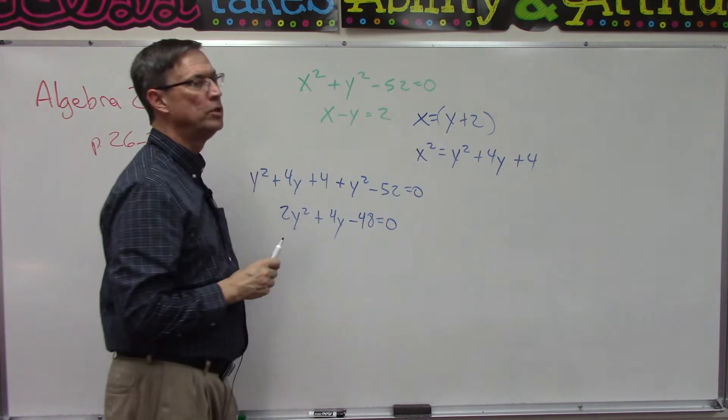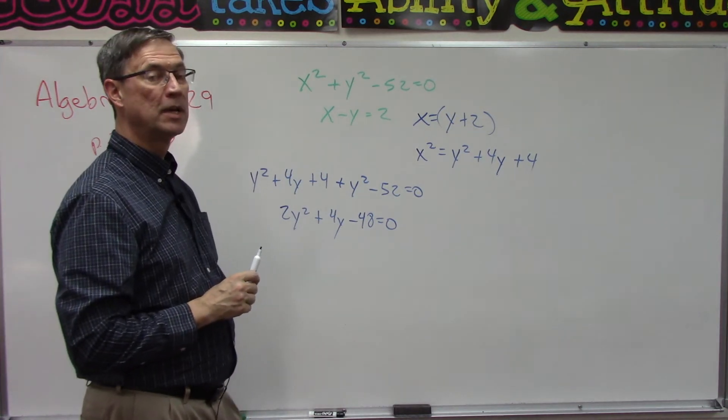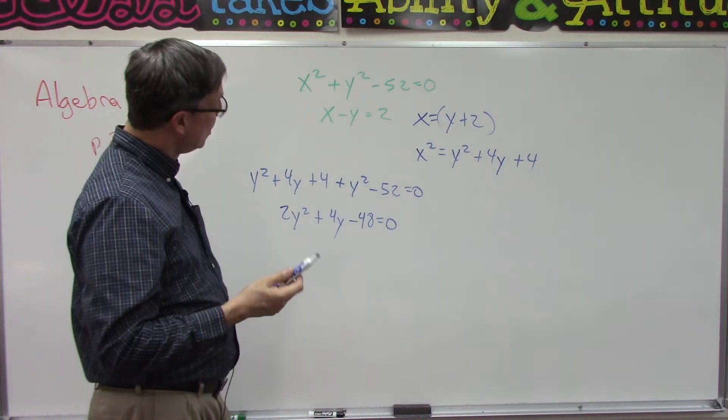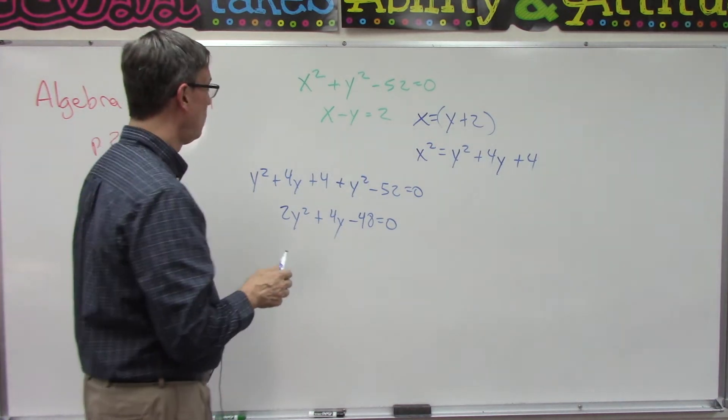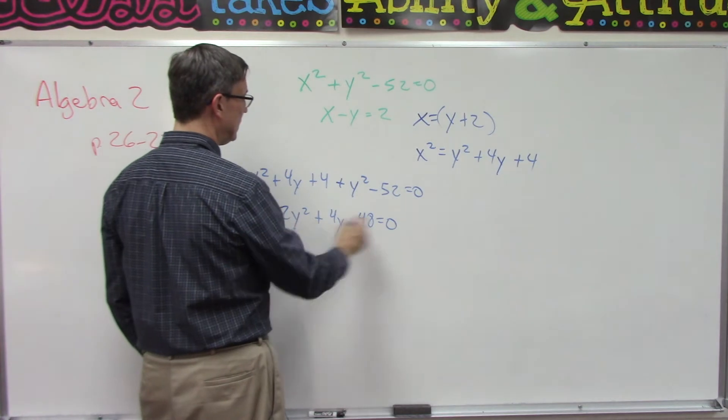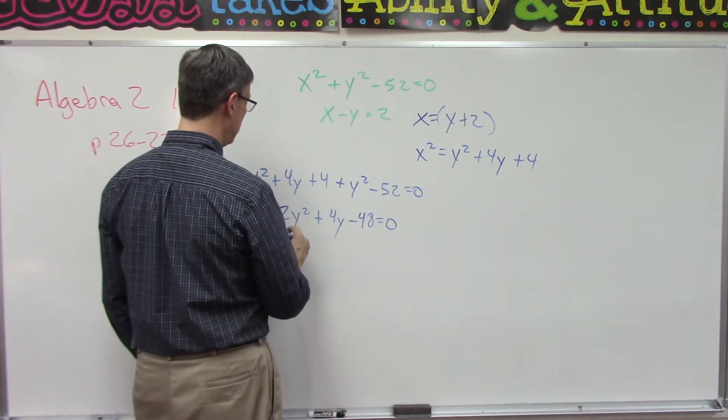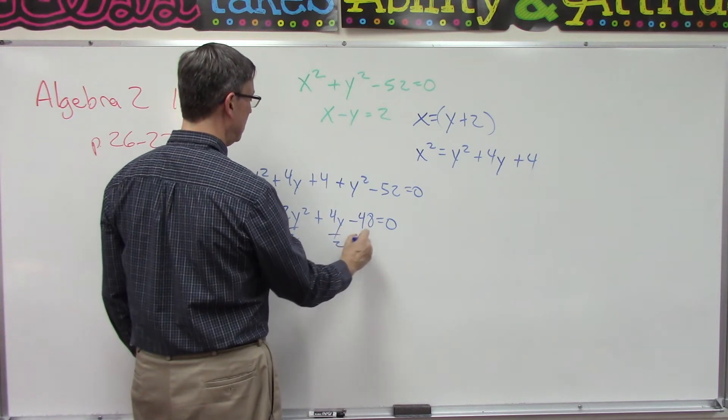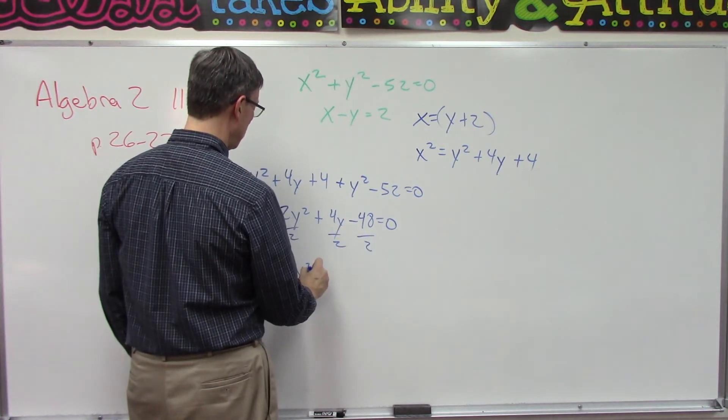At this point you could use the quadratic equation: negative b plus or minus the square root of b squared minus 4ac over 2a. Or we could factor and solve for y. I'm noticing that they are all divisible by two, so I'm going to divide everything by two.